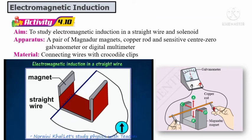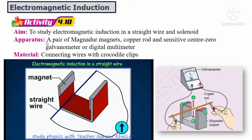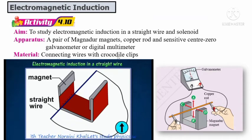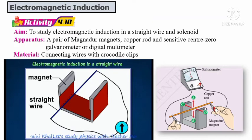Refer to your textbook activity 4.10. The aim of this activity is to study electromagnetic induction in a straight wire and solenoid. Apparatus required: a pair of bar magnets, copper rod, and sensitive center-zero galvanometer or digital multimeter. Material: connecting wires with crocodile clips. For the first part, we will discuss a straight wire. This is the copper rod connected via connecting wire to a galvanometer, and this is the bar magnet.